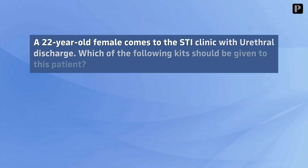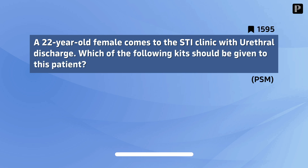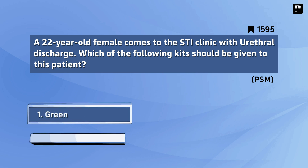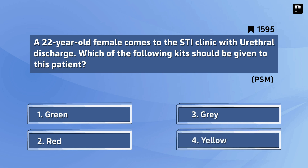Question 10: A 22-year-old female comes to the STI clinic with urethral discharge. Which of the following kits should be given to this patient? Your options are: green, red, grey, yellow. And the correct answer is grey.